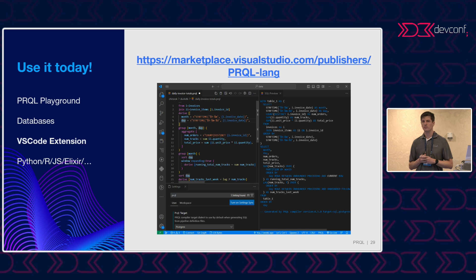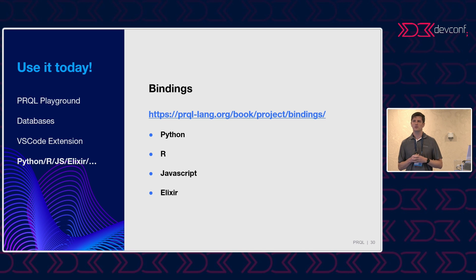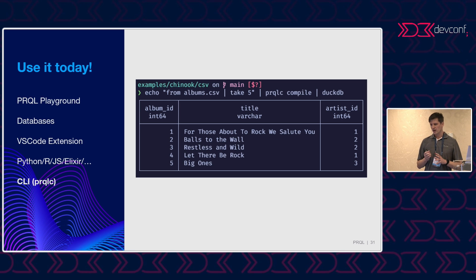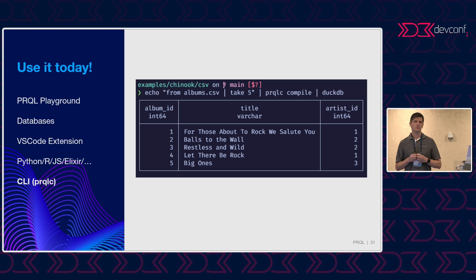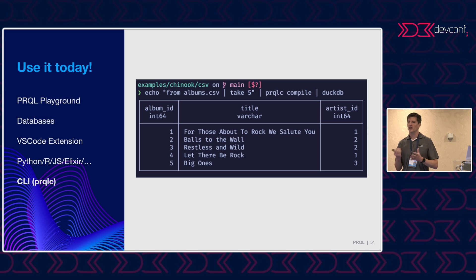There's a VS Code extension, given that's one of the most popular editors. We have language bindings in Python, R, JavaScript, and Elixir, to name just a few. As people learn about the project and get excited, they contribute extensions for the languages they're interested in, so there may be even more by now. Finally, we have a CLI called prequel-c — you can pipe a Prequel query on stdin and produce SQL on stdout, then pipe that to your favorite database CLI like DuckDB, psql for Postgres, or SQLite.